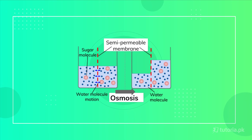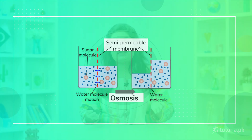Then osmosis is discussed — it refers to the movement of water. Water moves through a semi-permeable membrane between two solutions: one with a higher concentration of solute and one with a lower concentration. Water molecules move from the lower solute concentration to the higher solute concentration in order to create a balance.